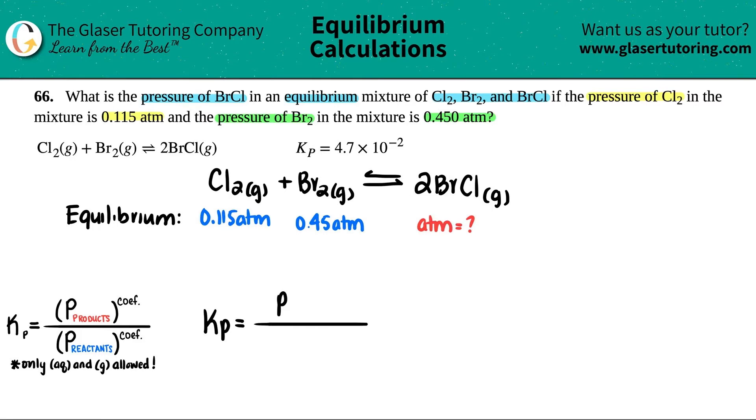Kp equals pressure of the products - there's only one so it's the pressure of BrCl. It has to be raised to the coefficients. I have a 2 in front, so I have to take this pressure and raise it to the second.